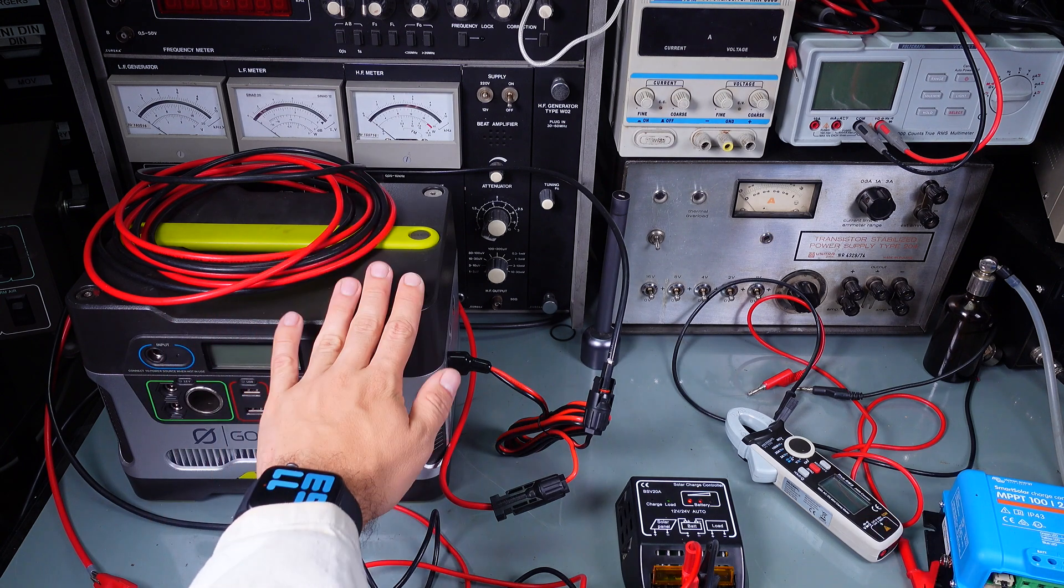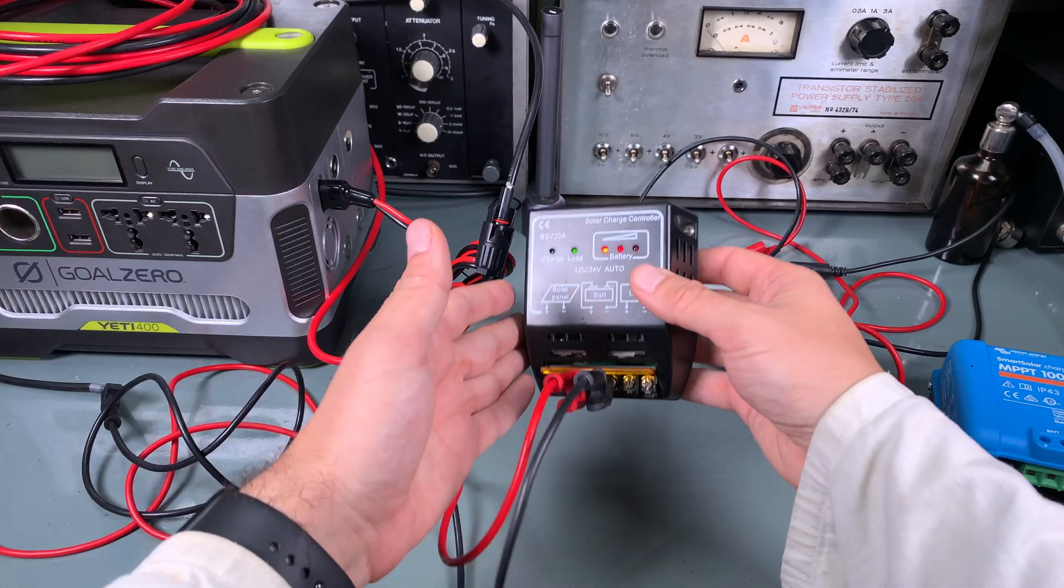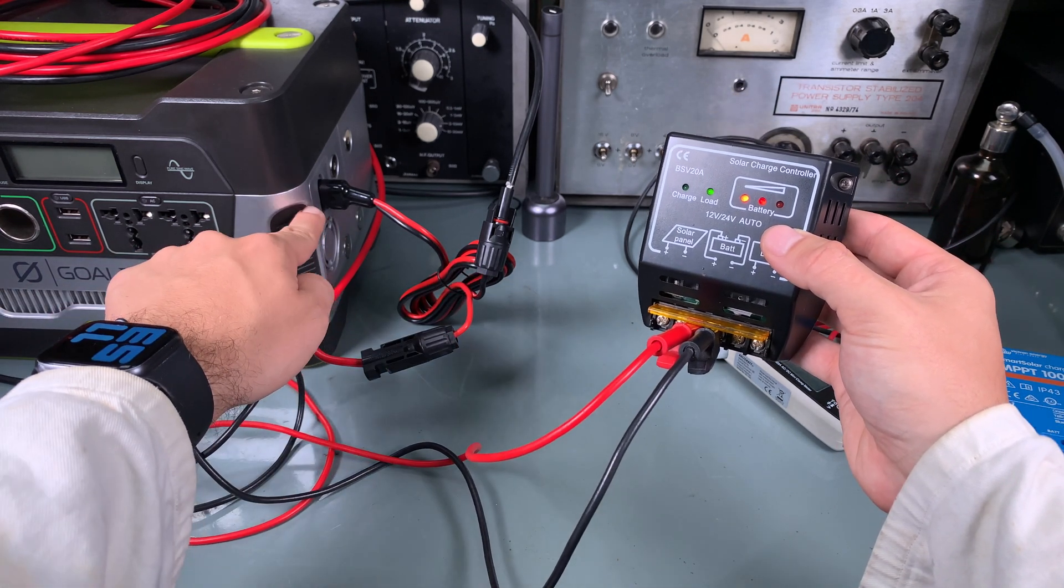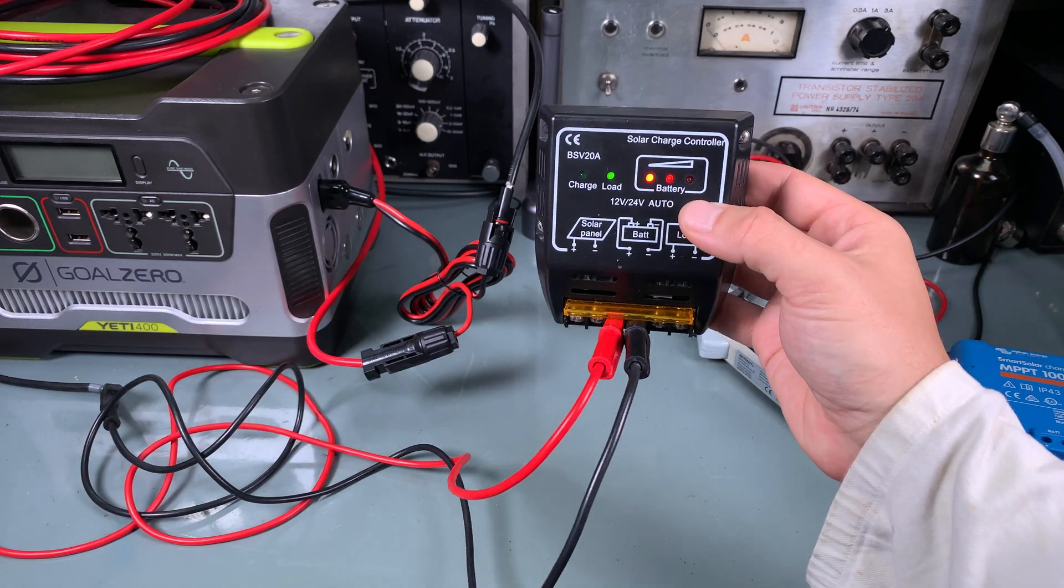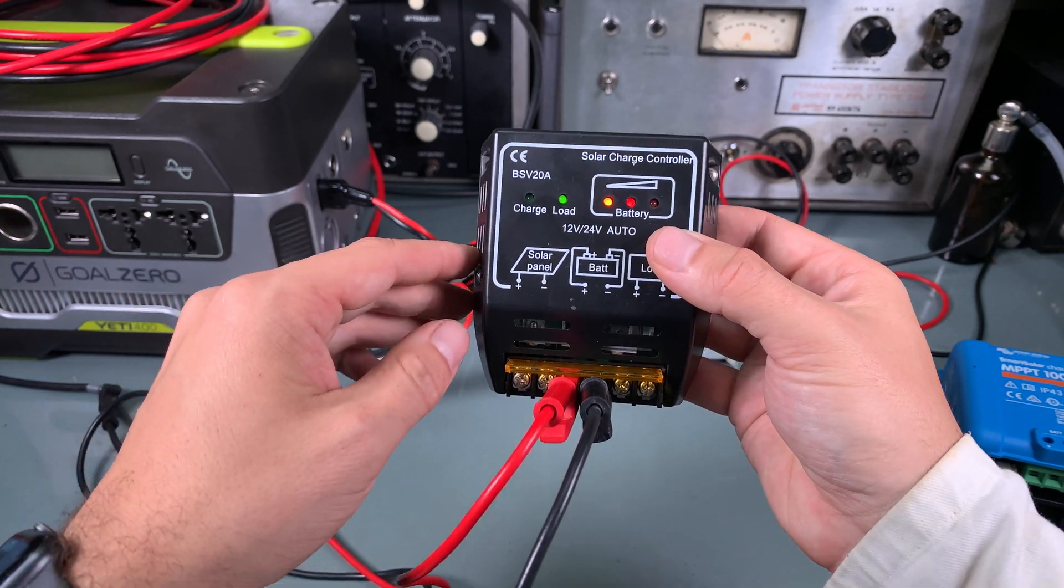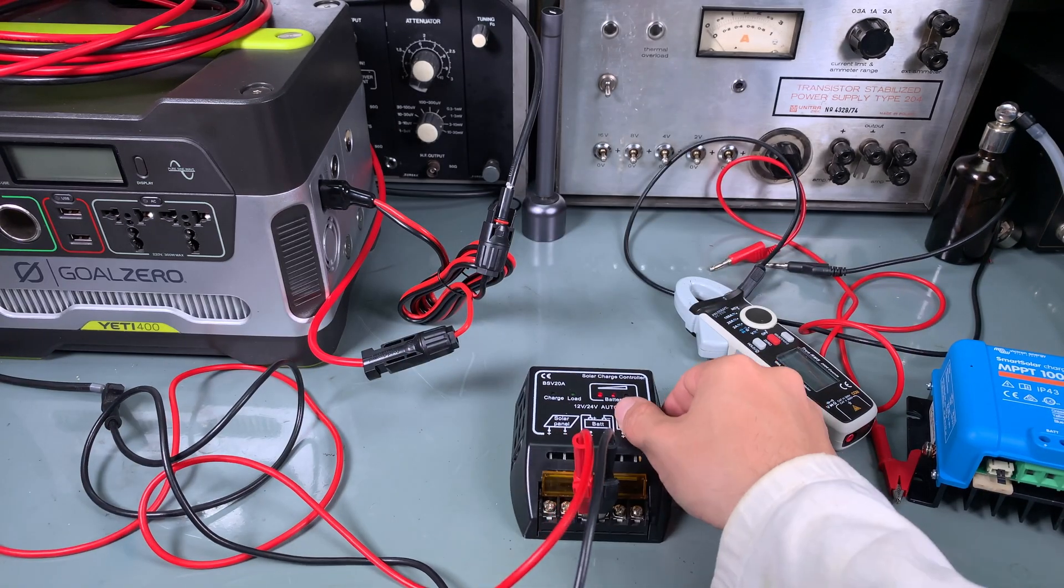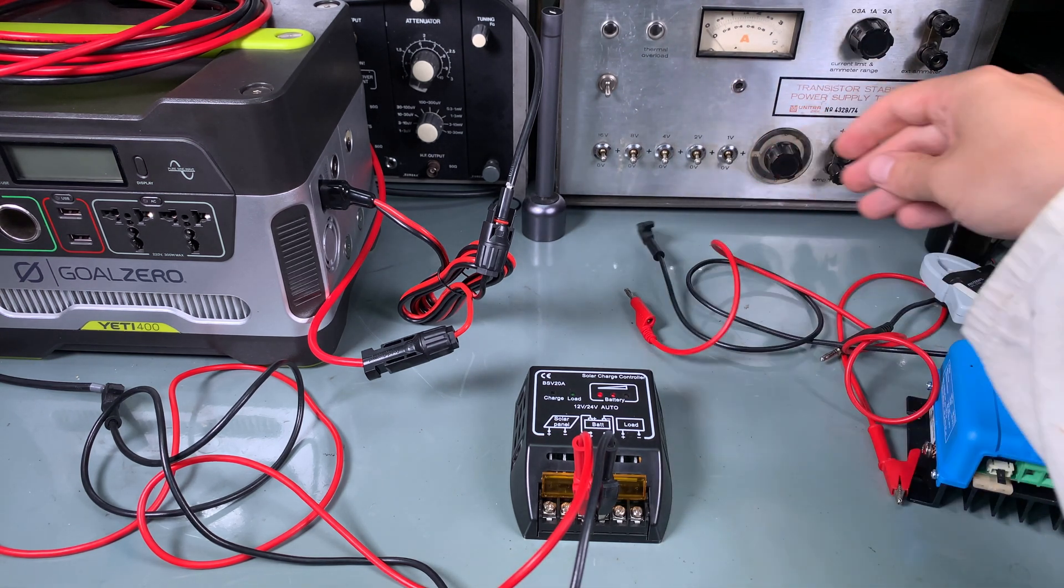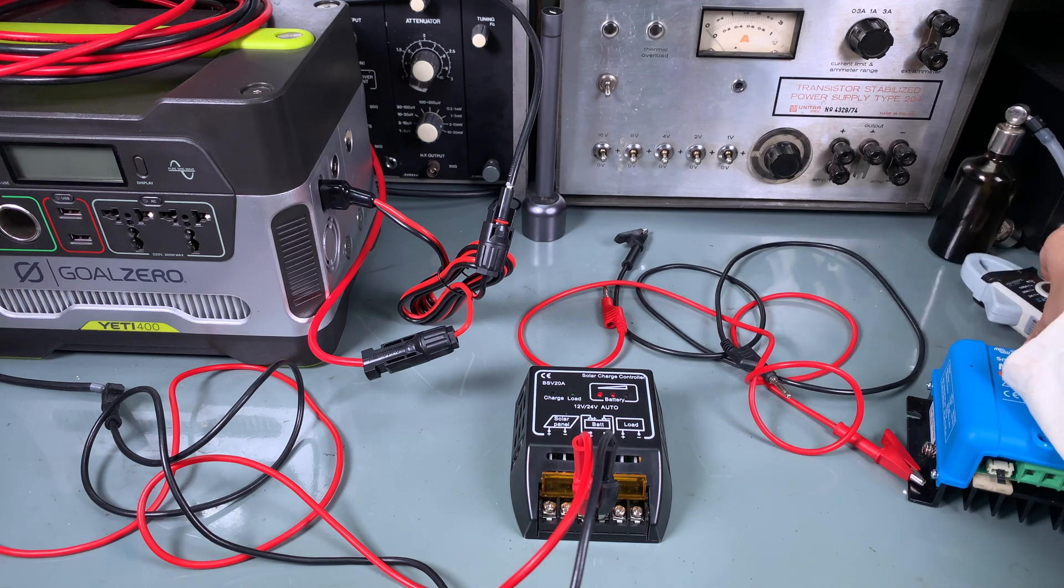I've got my Goal Zero connected to the PWM controller by those two wires, a lot of cable and it end up with the Anderson power pole. The controller is working, we've got the battery voltage and now I'm going to grab another wire and we are going to connect it into the power supply.